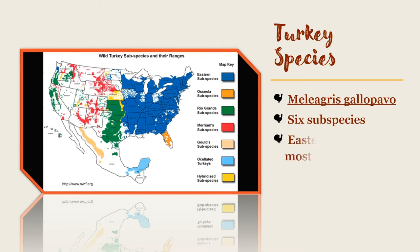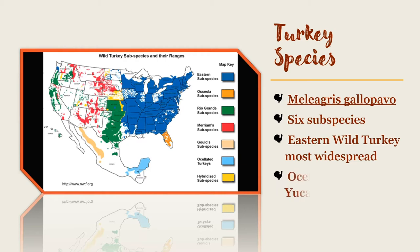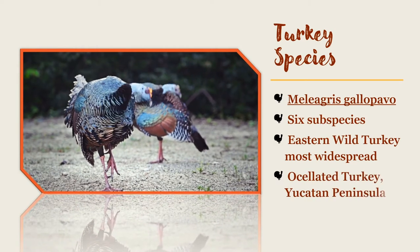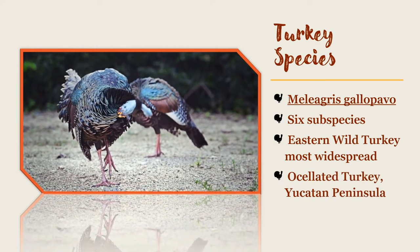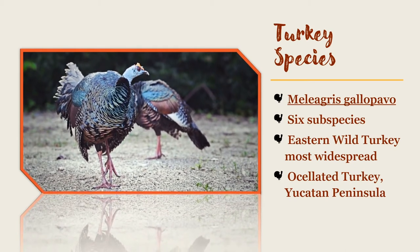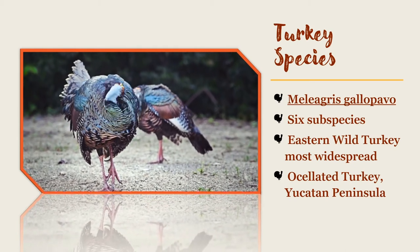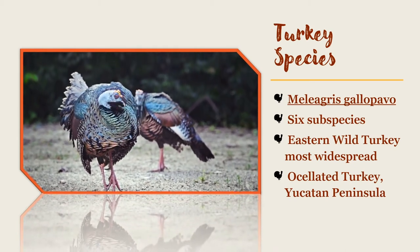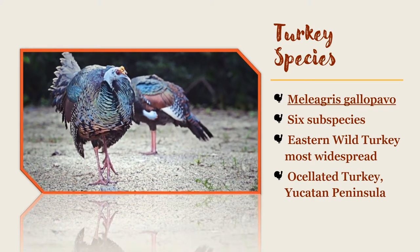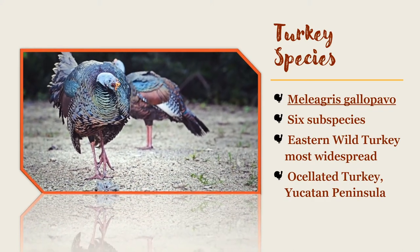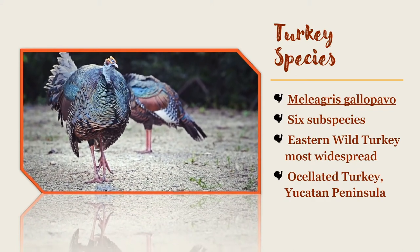The eastern wild turkey is the most widespread. The Ocellated turkey, found on the Yucatan Peninsula of Mexico, looks very different from the turkey that so many of us recognize. Instead, this subspecies is almost covered in iridescent feathers and has yellow caruncles on its head and face.